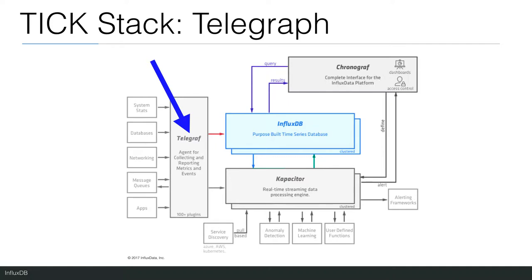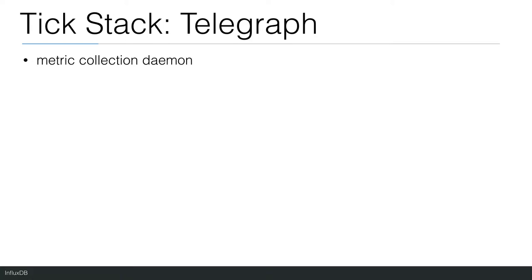Telegraf is a plugin-driven server agent for collecting and reporting metrics. Telegraf has plugins or integrations to source a variety of metrics directly from the system it's running on, pull metrics from third-party APIs, or even listen for metrics via StatsD or Kafka consumer services. It's plugin-driven for both collecting and outputting of data, so it's easily extendable.